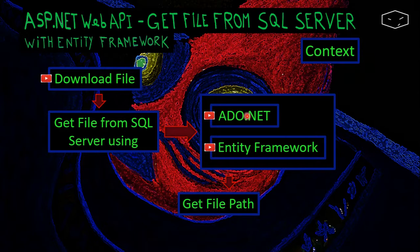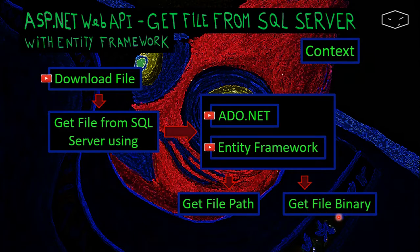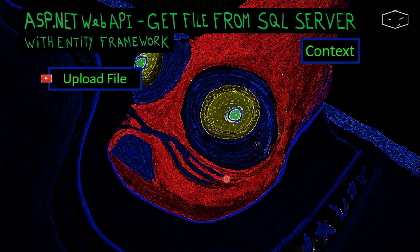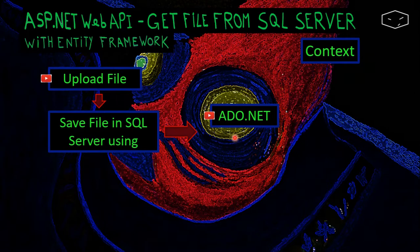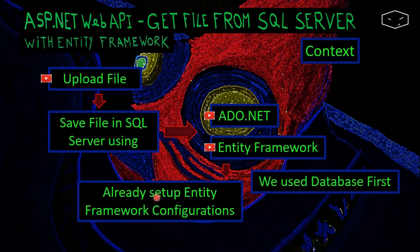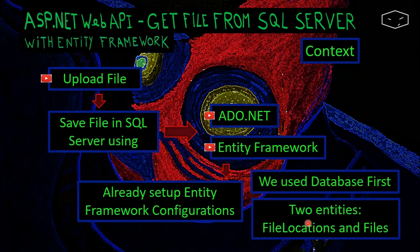In these videos we get the file path from the database so we can get the file from the system, and we get the file binary from the database. Also in this video we will get the file path a second version using Entity Framework but without System.LINQ. I already have a video about uploading the file, and another about ADO.NET where we save the file in the database. Because of that video I already set up the Entity Framework configurations using database-first, and we have two entities: FileLocations and Files.